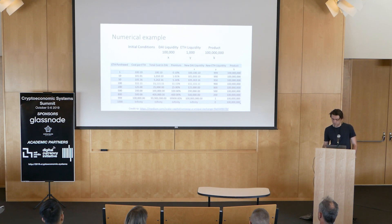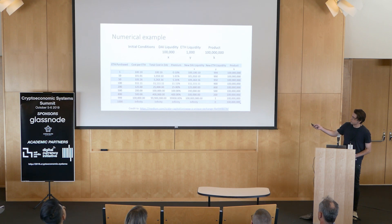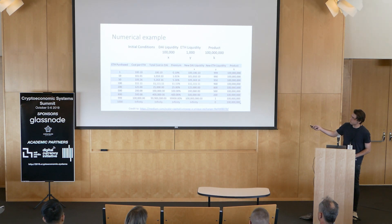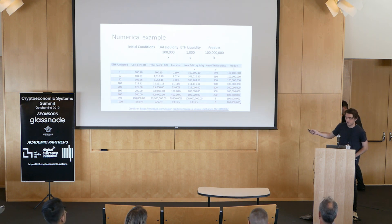To walk through a quick numerical example: say that we're in the DAI-ETH pool. The formula X times Y equals K is the market scoring rule. We have a constant product of 100 million. These would be the marginal prices for a certain amount of ETH purchased. We start with 1,000 ETH in the pool. You can purchase up to all of that ETH at a marginal price that goes to infinity as you take the entire pool.